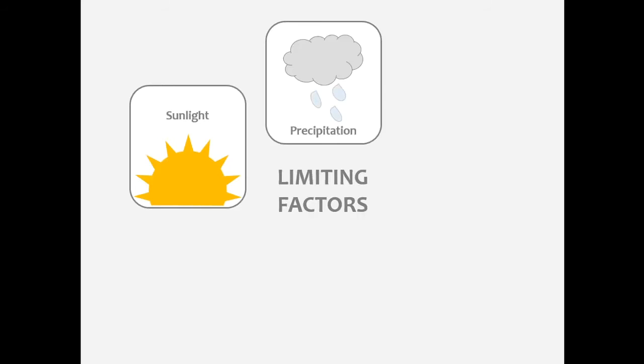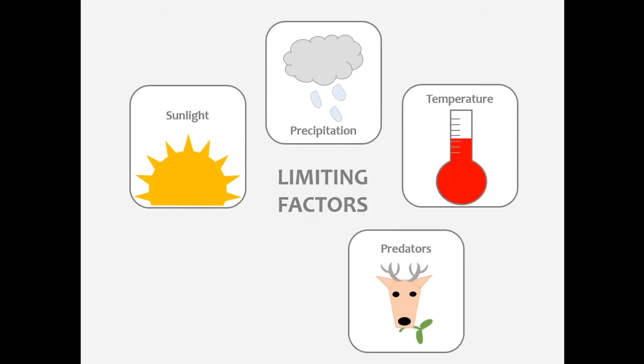Examples of checks and balances include limiting factors. Limiting factors are things in the environment like the amount of sunlight and precipitation, the air temperature, predators, and geographic features that limit how much a species can grow or how far it can spread.